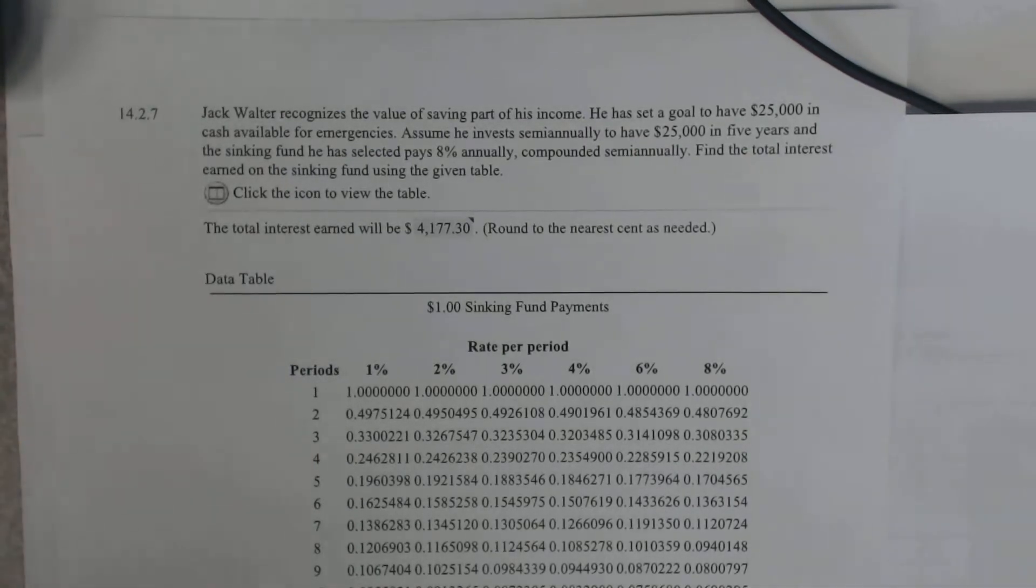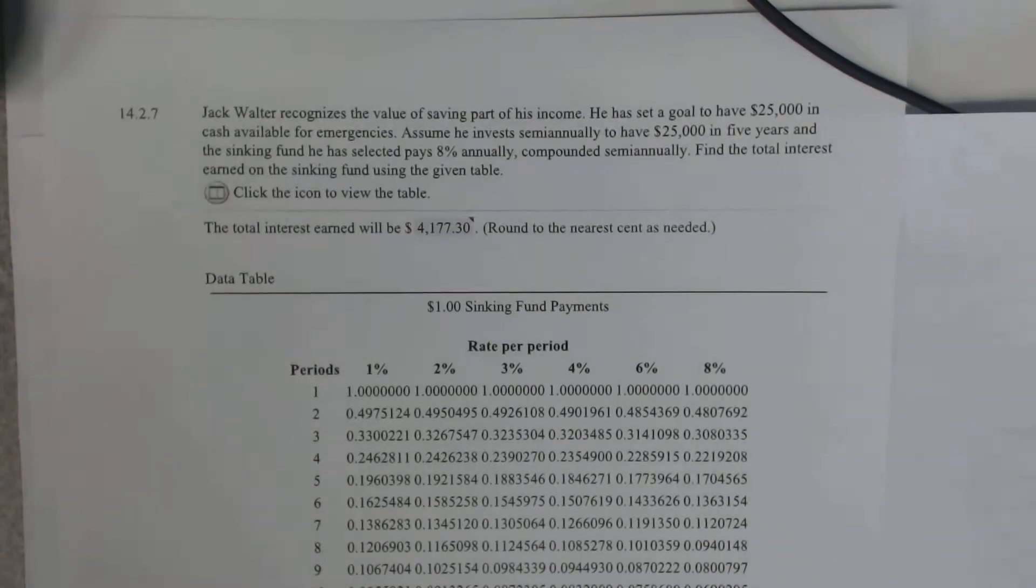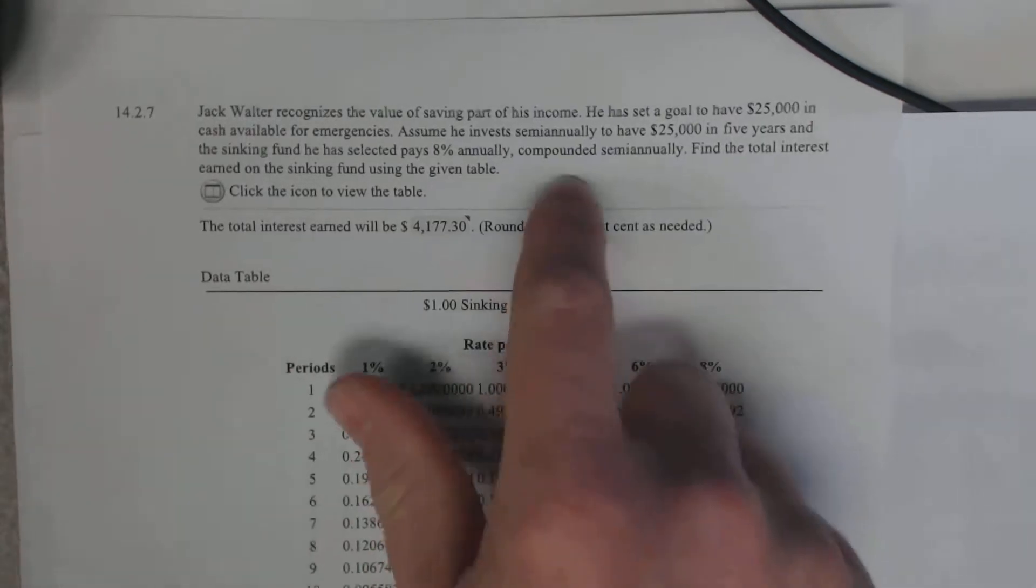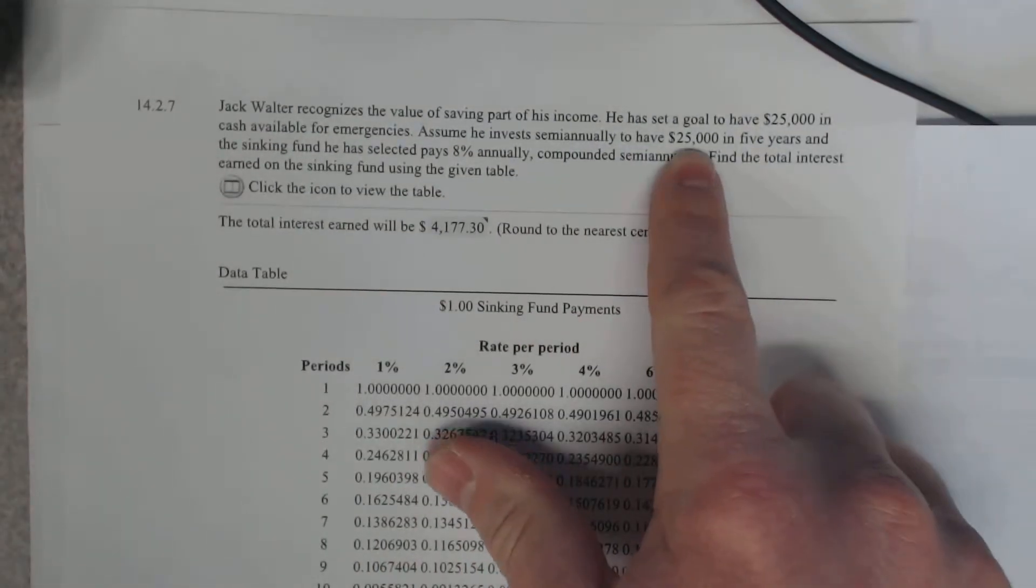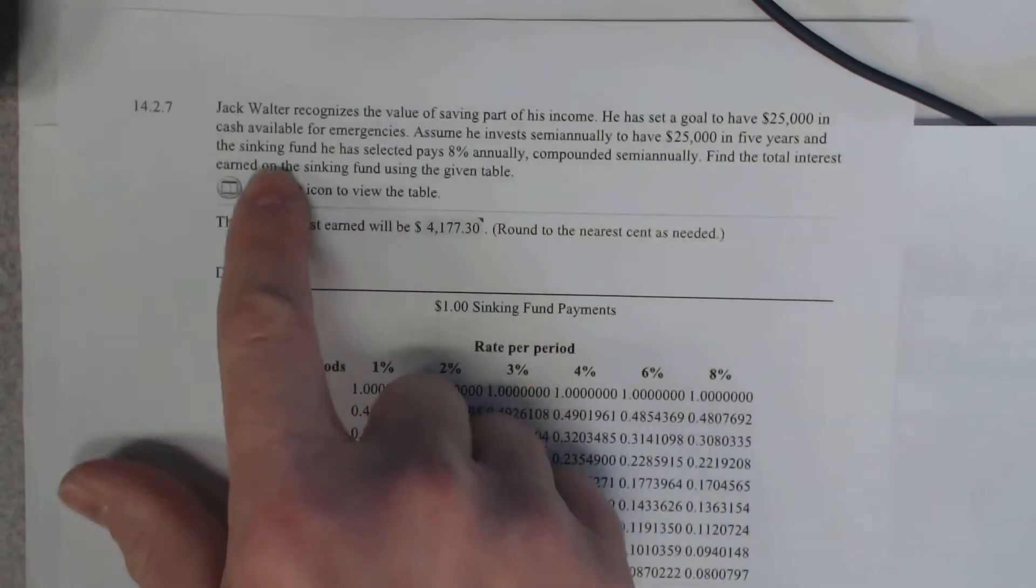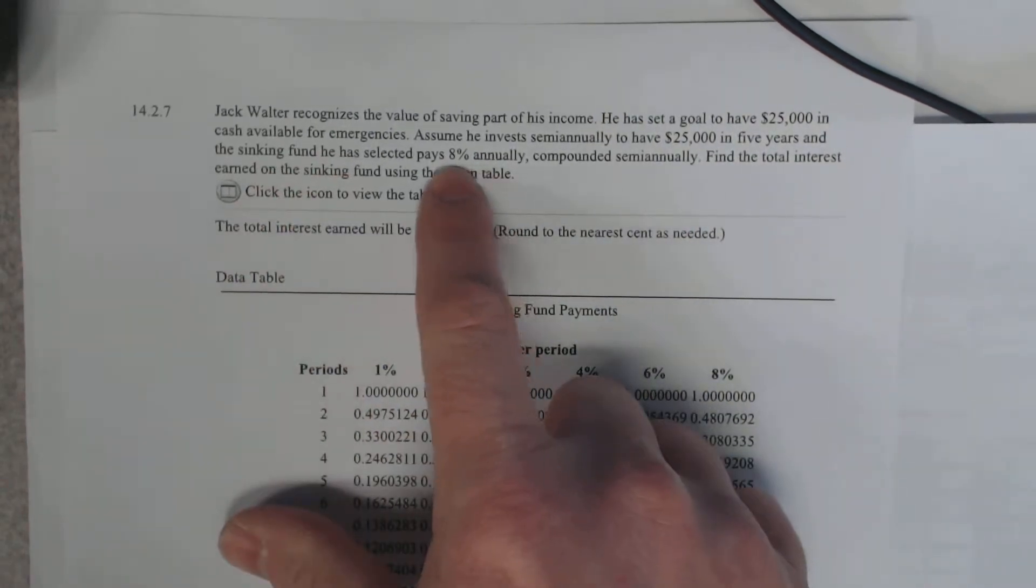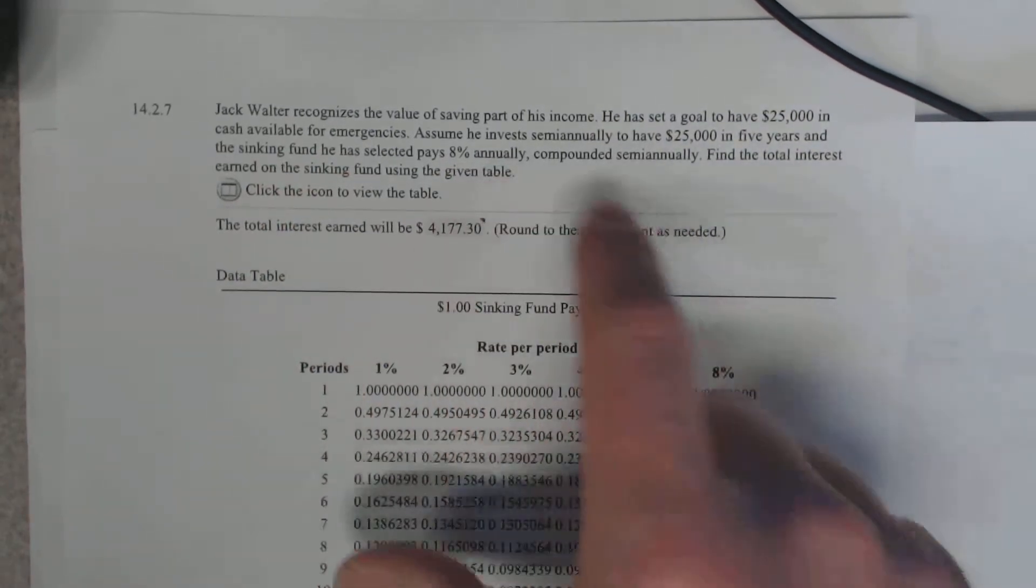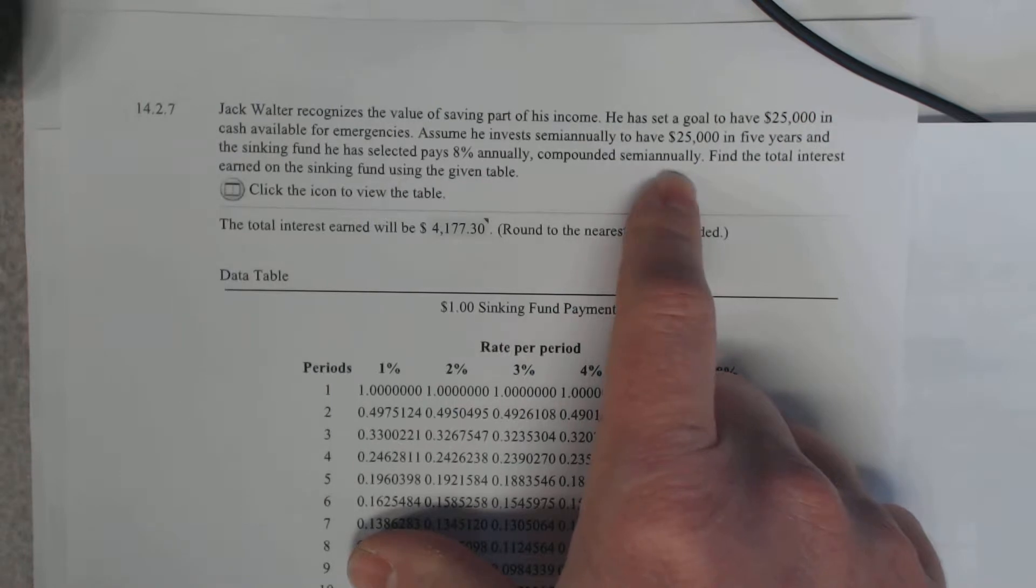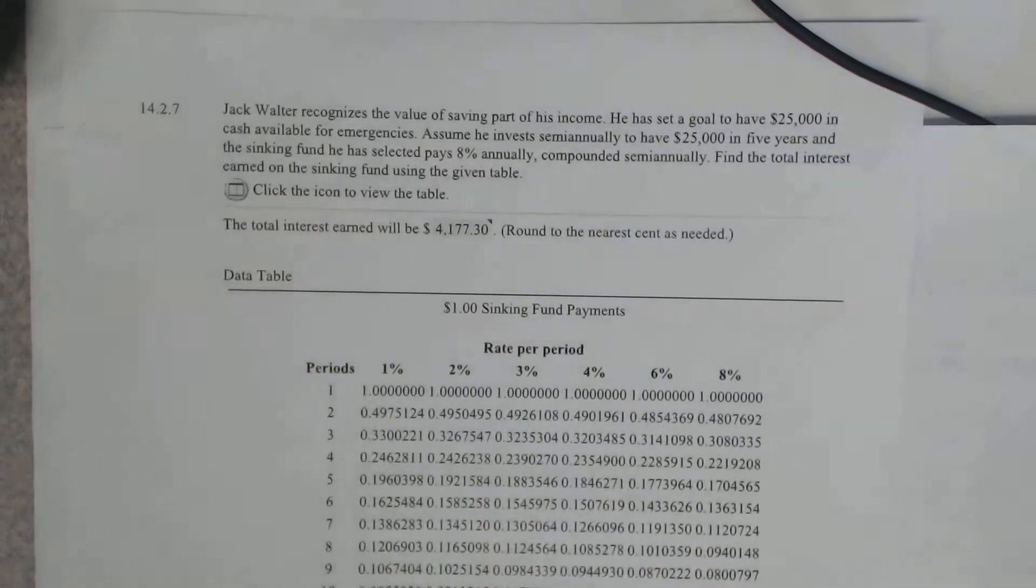Here we have a sinking fund question. It says that Jack Walter recognizes the value of saving part of his income. He set a goal to have $25,000 available for emergencies. Assume he invests semi-annually to have $25,000 in five years. He's going to use a sinking fund and it pays 8% annually, compounded semi-annually. Find the total interest earned on the sinking fund.